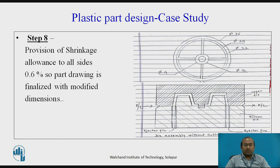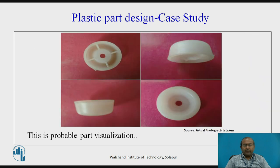At the end, the provision of shrinkage is applied to all sides — about 0.6%. The part drawing is finalized and modified dimensions are shown. The part geometry and cavity are shown in two halves; the parting line and ejector pins are shown. You can observe the sectional front view as well as the top view. This is the die assembly without the gating system. This is the plastic part design we considered as a case study.